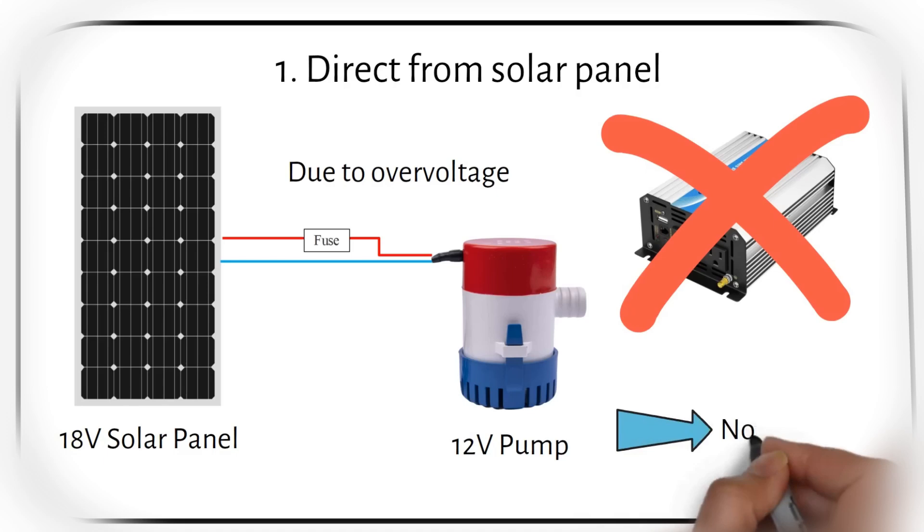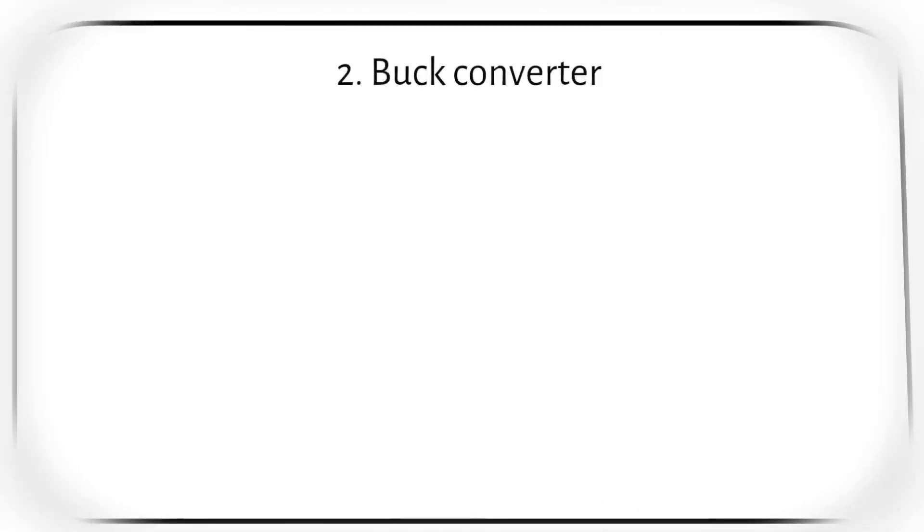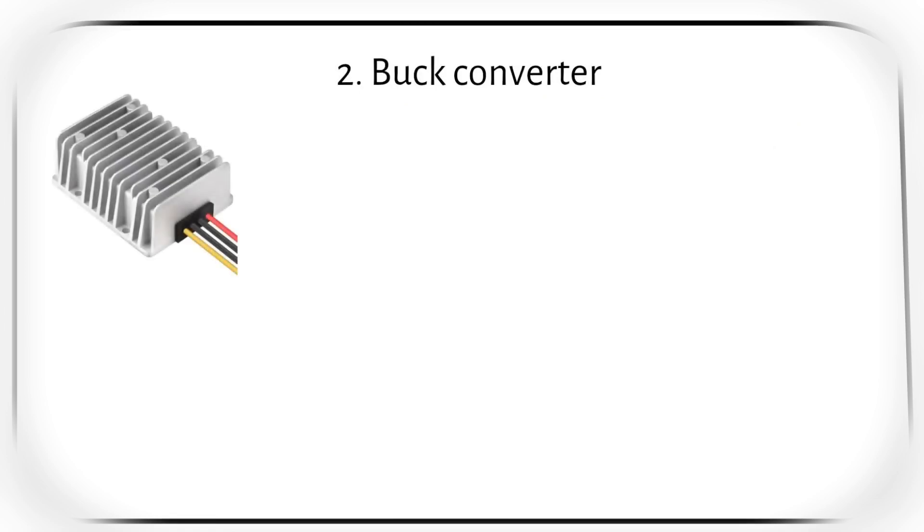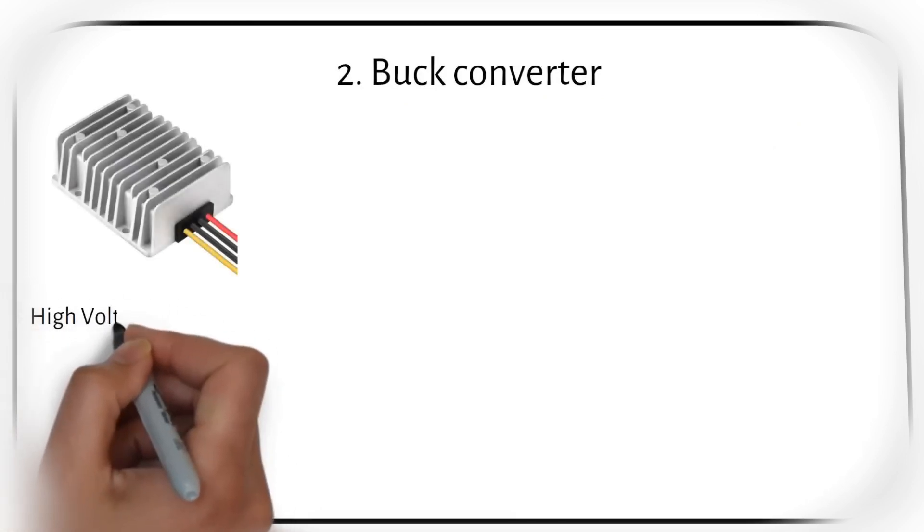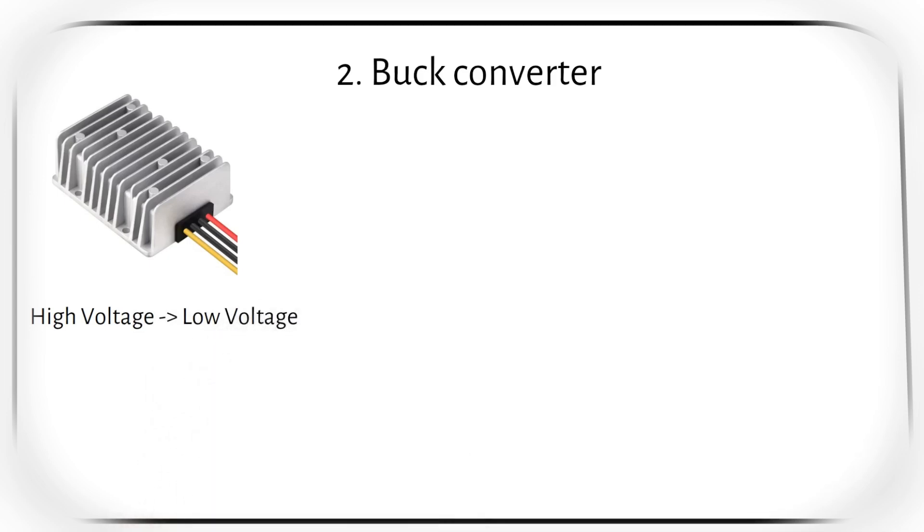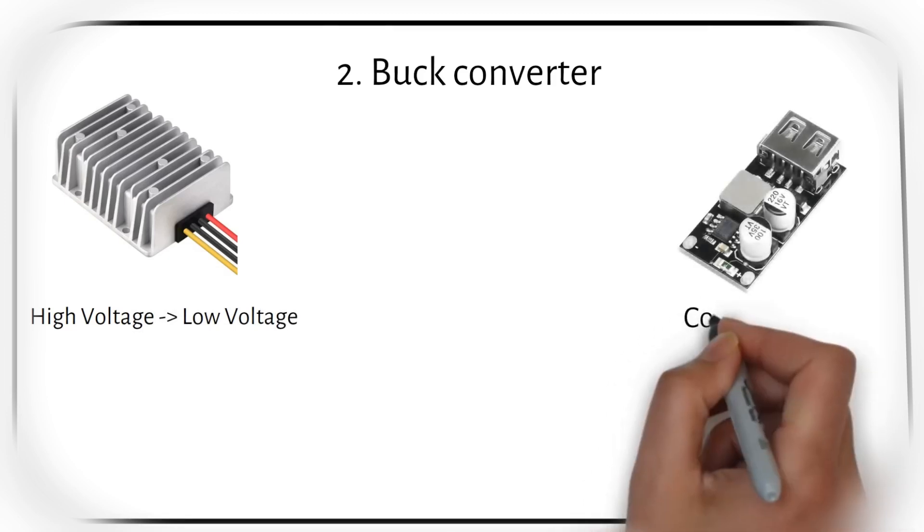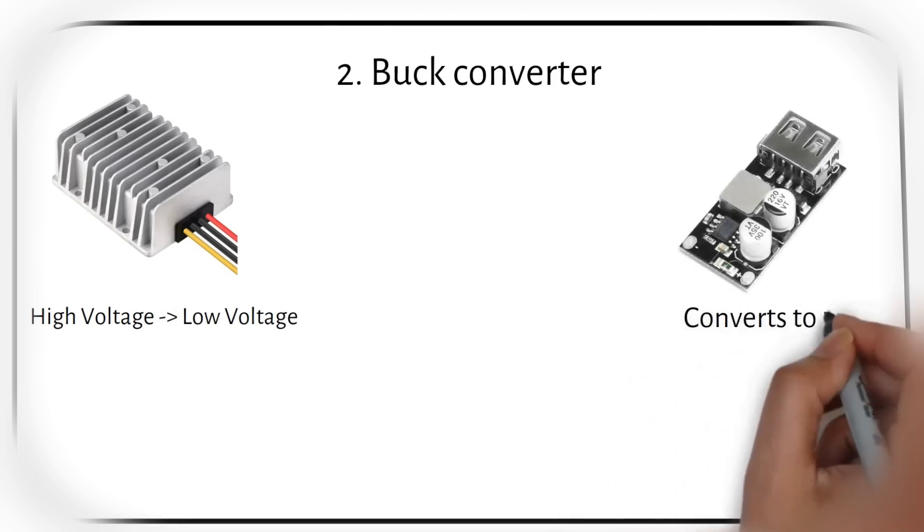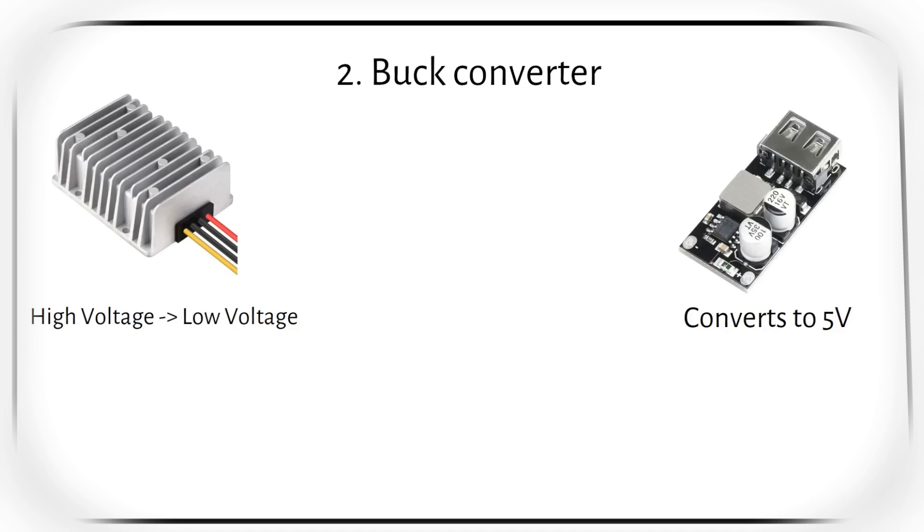Method 2: Buck converter. A buck converter takes a higher voltage and steps it down to a lower voltage. You can use this to power your USB devices. When you use this module, it converts the solar panel's voltage to 5V. Most buck converters will be 12V at the output, but you can also get 24 or 48V models.